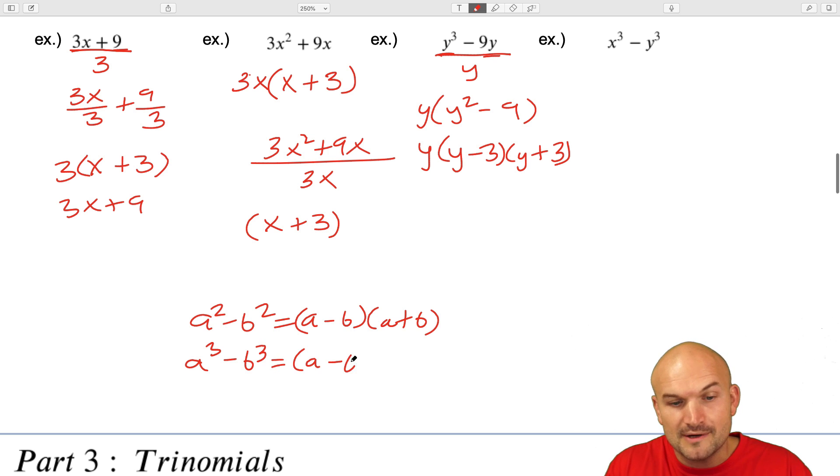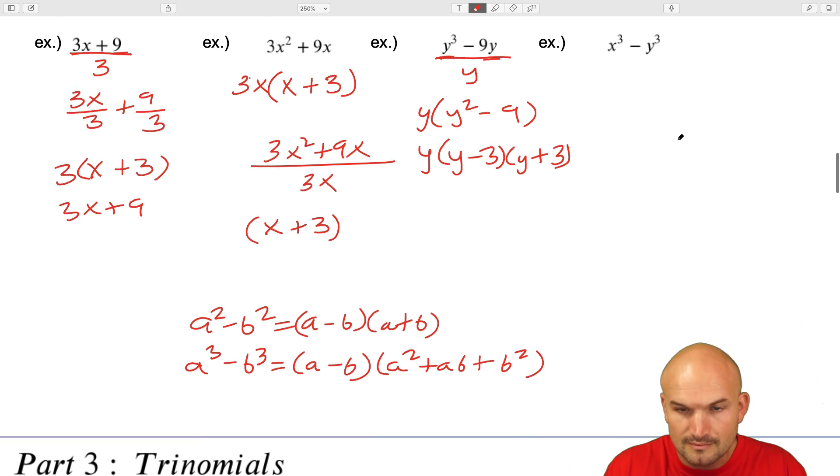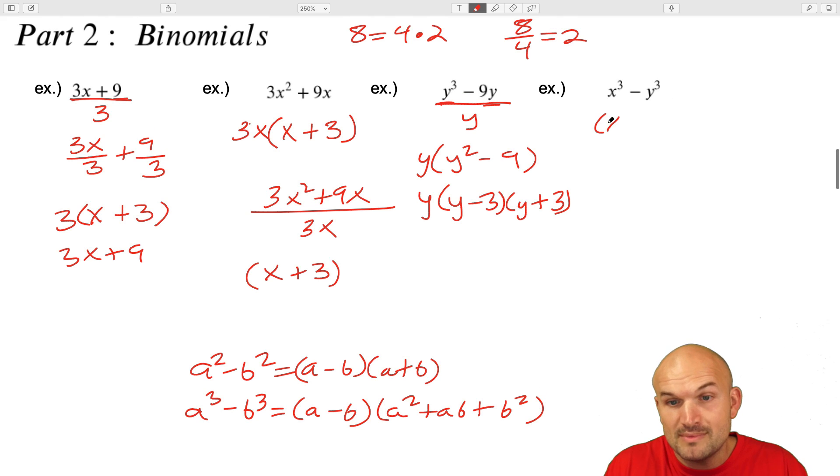We're not going to multiply by a squared minus b squared because if you were to multiply that out, it wouldn't work. But the difference of two cubes basically gives us a squared plus ab plus b squared. So in this case, the factored form is just going to be x minus y times x squared plus xy plus y squared.